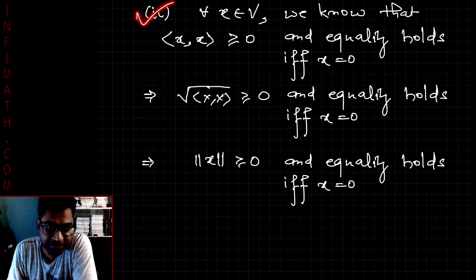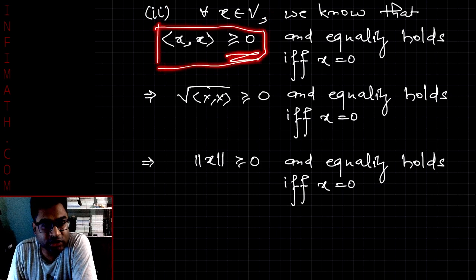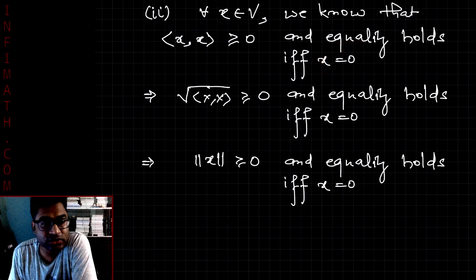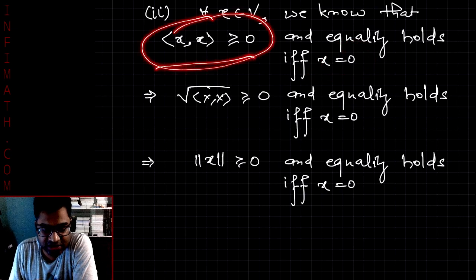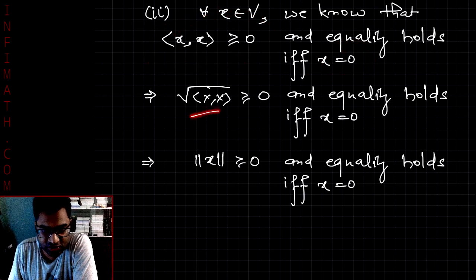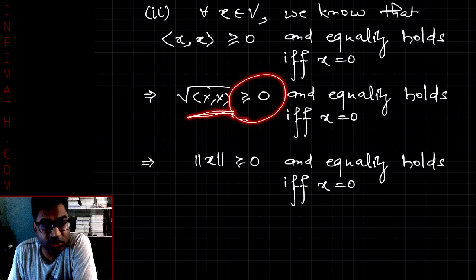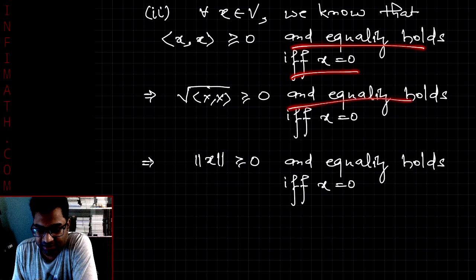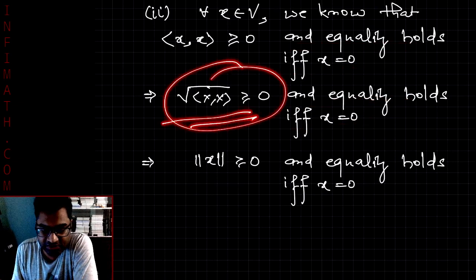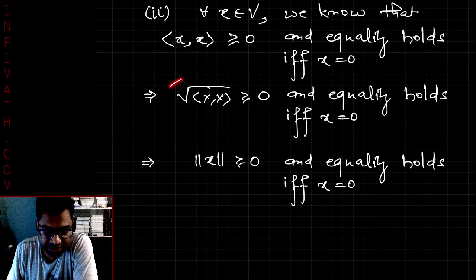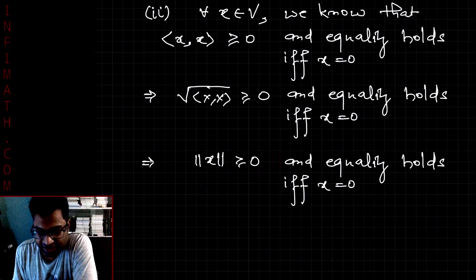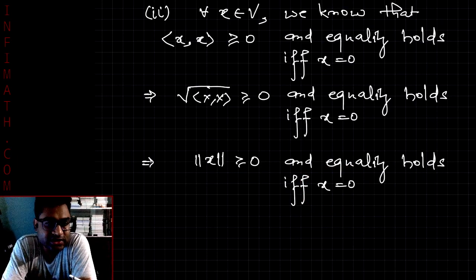The second property is very easy to prove. For any vector x in V, the inner product ⟨x, x⟩ is greater than or equal to zero, and equality holds if and only if x equals zero. Taking the square root on both sides gives the square root of ⟨x, x⟩ ≥ 0, which is just the norm of x. So norm of x ≥ 0, with equality if and only if x equals zero.